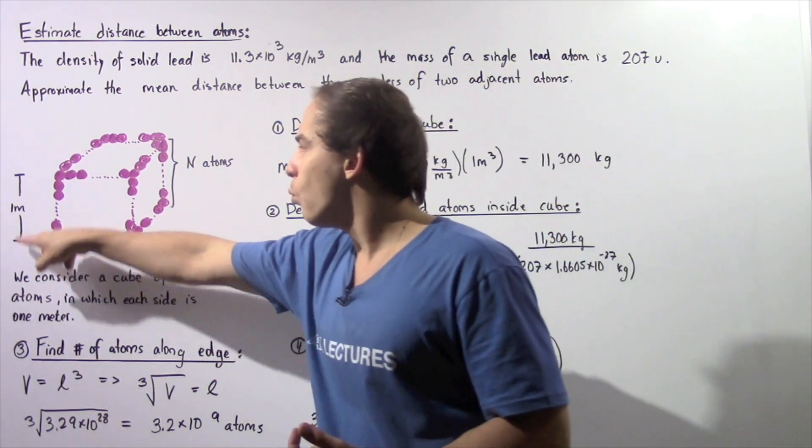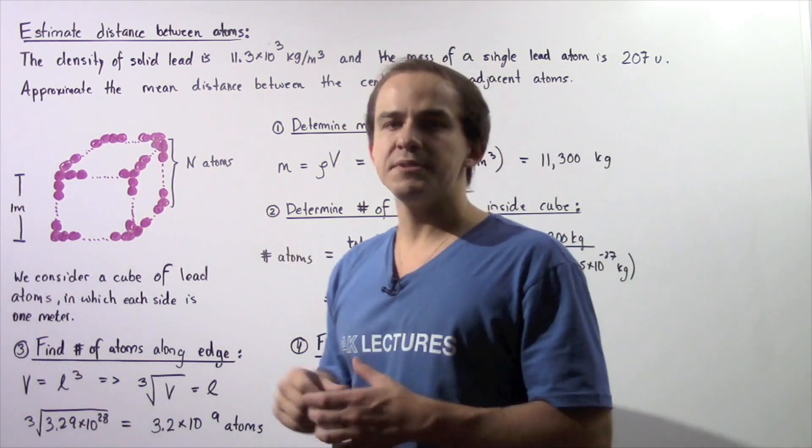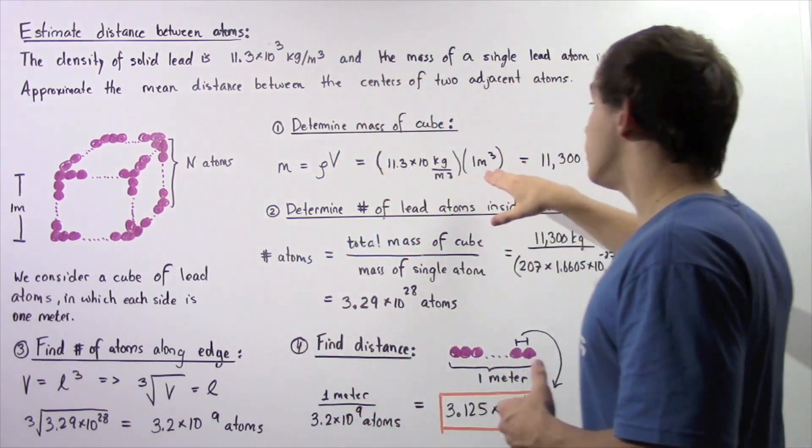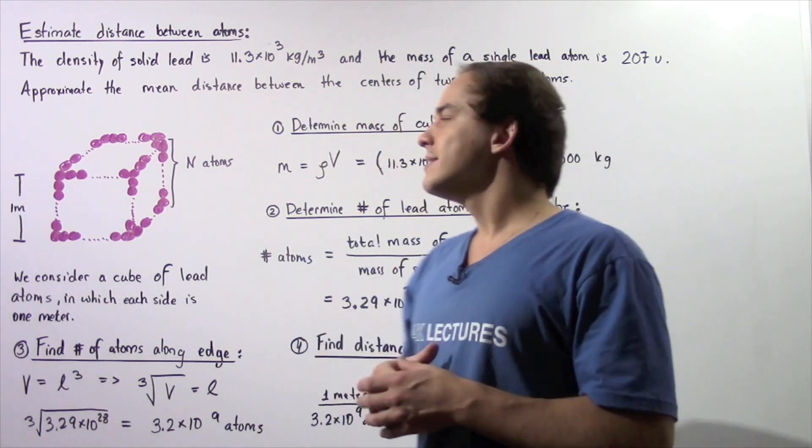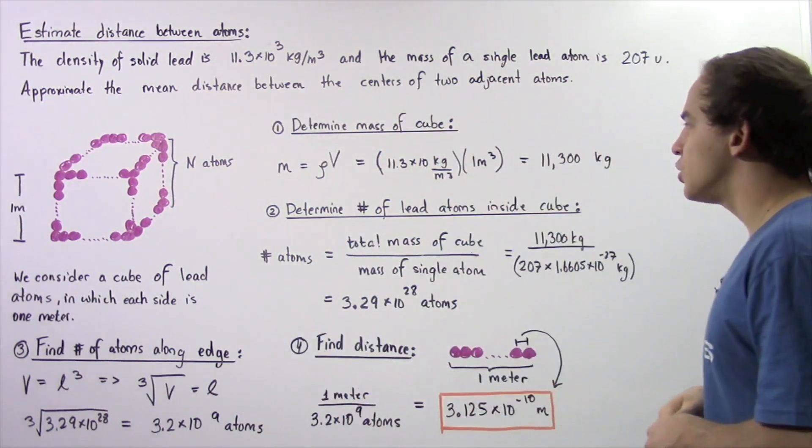So mass is equal to the product of the volume and the density. So the volume is simply 1 meter times 1 meter times 1 meter. So that's 1 meter cubed.